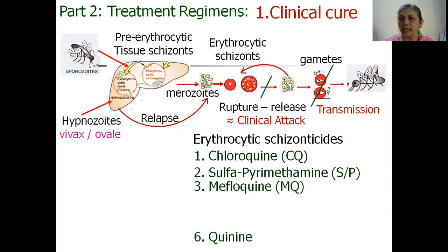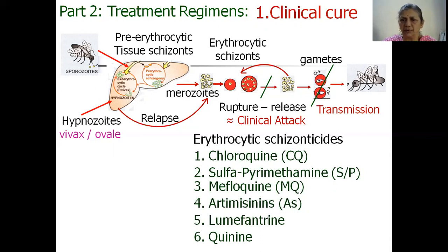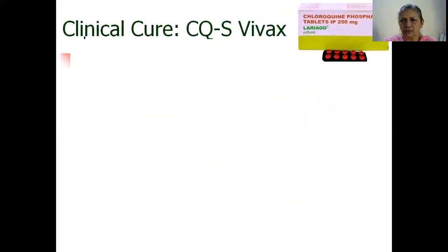Next is mefloquine, and the major breakthrough was the discovery of artemisinin, which is effective in both chloroquine resistant and sensitive malaria. Artemisinins are commonly used as combination treatments with sulfadoxine-pyrimethamine, mefloquine, or lumefantrine. Let us now go on to see the strategy and the regimens used for clinical cure of chloroquine sensitive vivax malaria.